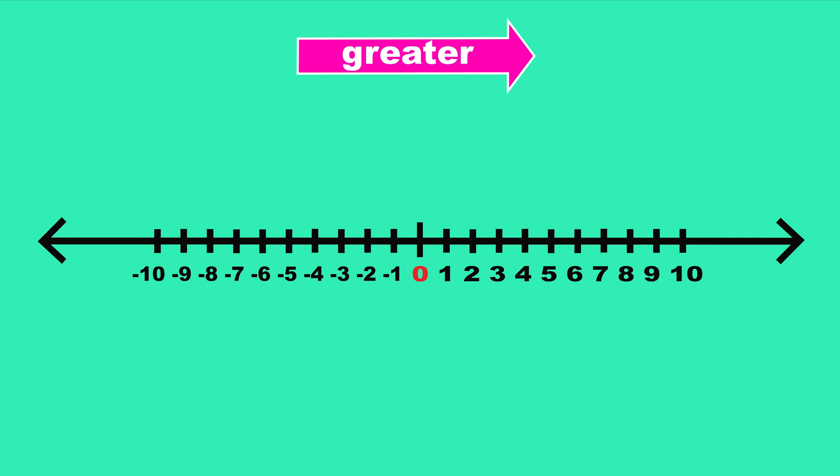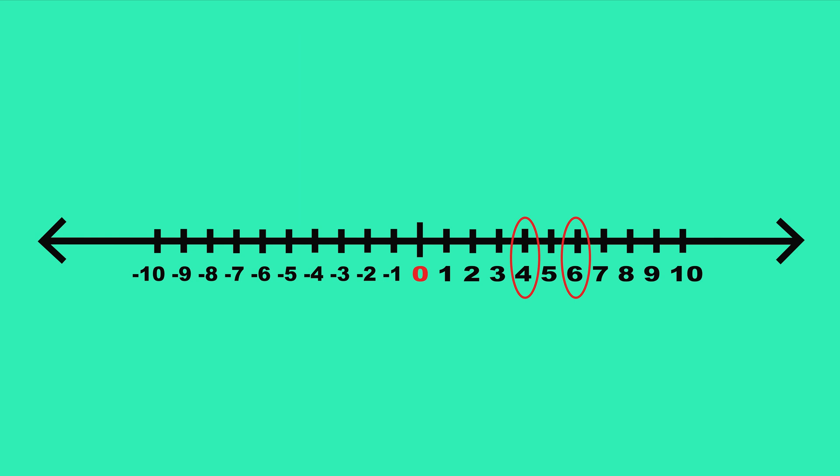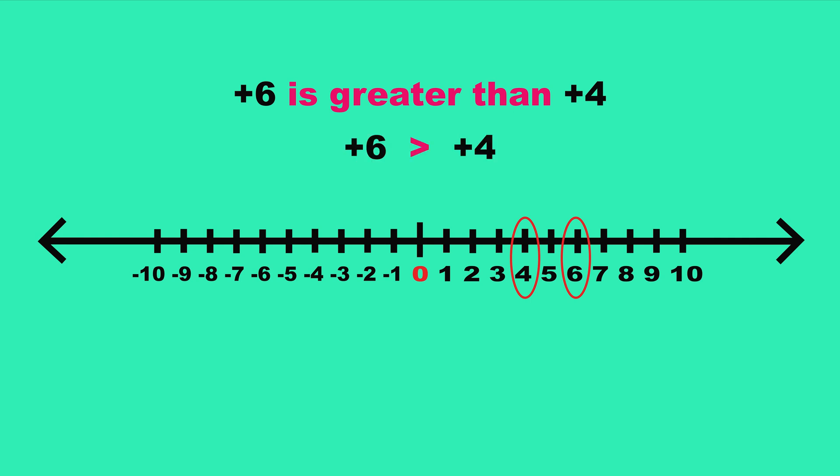Now let's compare some numbers like positive 6 and positive 4. Which is greater? Well, positive 6 is further right, so it is greater. We can write positive 6 is greater than positive 4. In maths we use symbols, so we write positive 6 is greater than positive 4, or we can write positive 4 is less than positive 6.